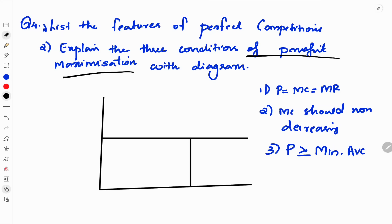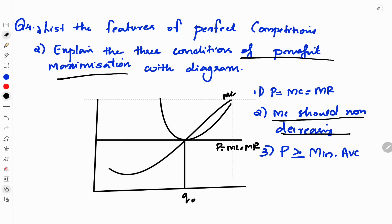This is the graph. This is the Q0 level of output. These are the conditions. That means P equals MC equals MR. This is the price. If we use MC, we need to check the slope. MC should be non-decreasing. The third condition is average variable cost minimum should be less than or equal to price for the firm to continue production in the short run.